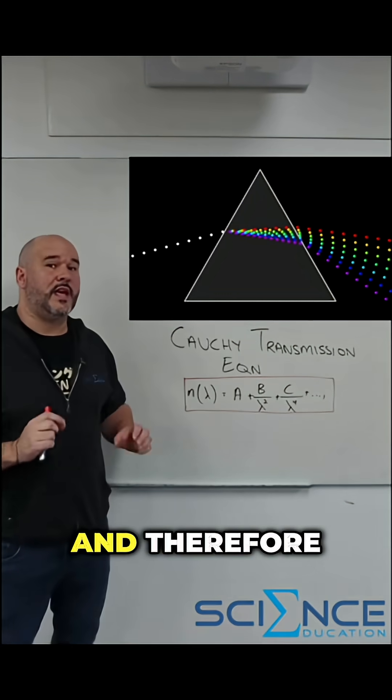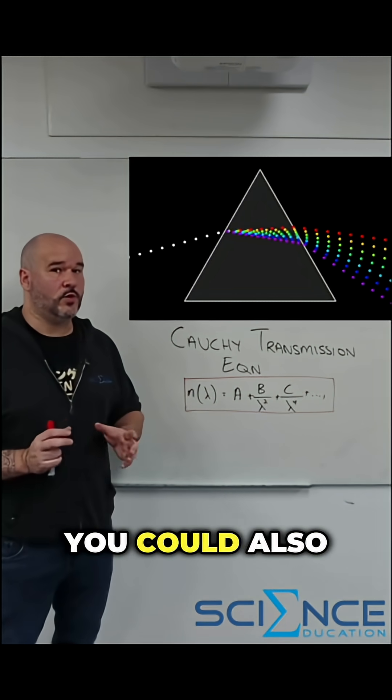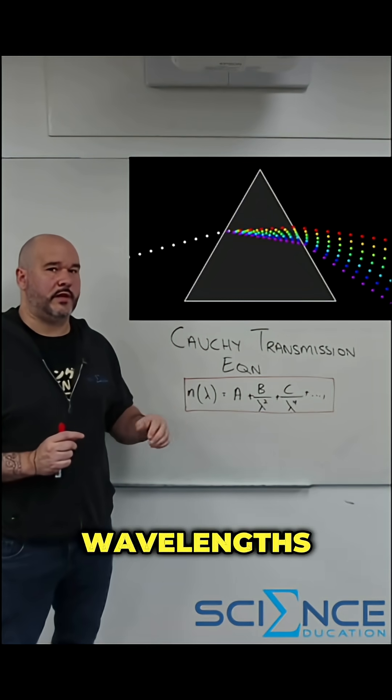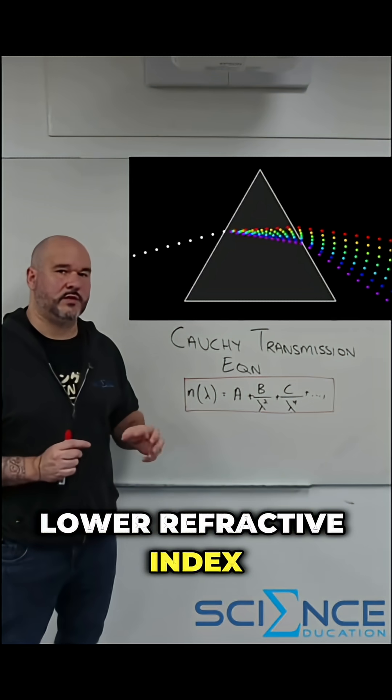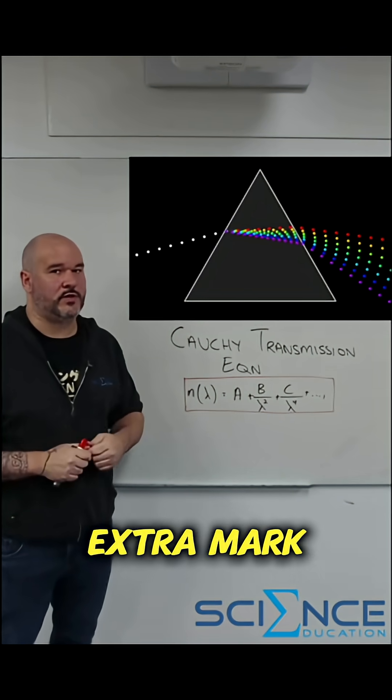Cauchy! And therefore red bends the least and violet bends the most. You could also support your answer with Snell's law showing that longer wavelengths that experience a lower refractive index also have a lower angle of refraction. Easy peasy, got you an extra mark.